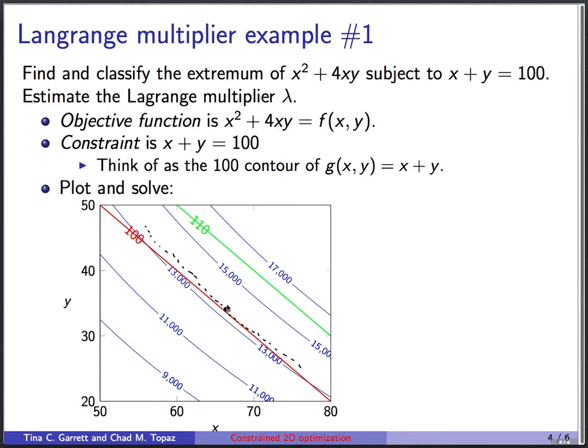So literally, this is the whole solution to the problem. You just look at the constraint. You find the point that has the largest value of the objective function along that constraint.